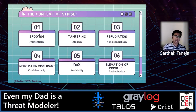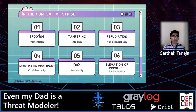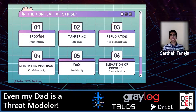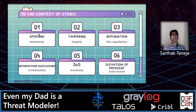Then we come to tampering. Tampering is about integrity. An example can include unauthorized changes made to persistent data such as that held in a database, or alteration of data when it's in flow from an open network to a computer — like a man-in-the-middle attack where you intercept and manipulate traffic through a proxy.